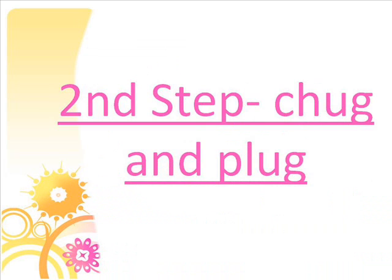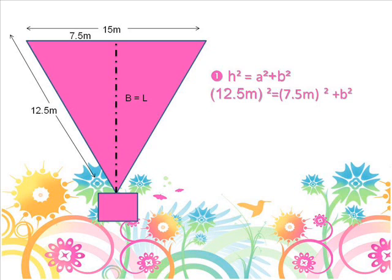The second step: chug and plug. The formulas that have been analyzed are shown, and then under that, we see how to replace the variable for numbers. h is the leg, 12.5. a is the base divided by 2, 7.5. And we want to find b.